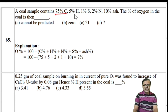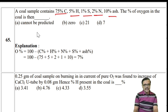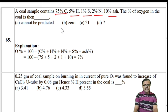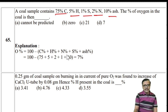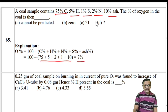Numerical: A coal sample contains 75% carbon, 5% hydrogen, 1% sulfur, 2% nitrogen, and some ash. Oxygen is calculated as: 100 − (75 + 5 + 1 + 2 + 10 ash) = 7%. So oxygen percentage is 7%.